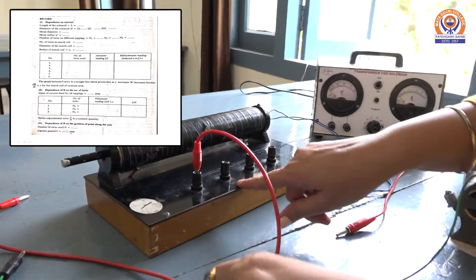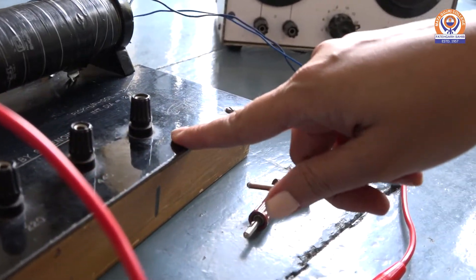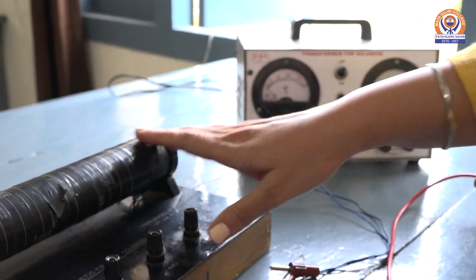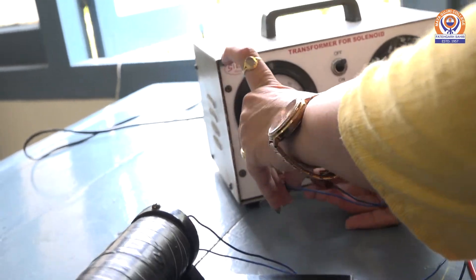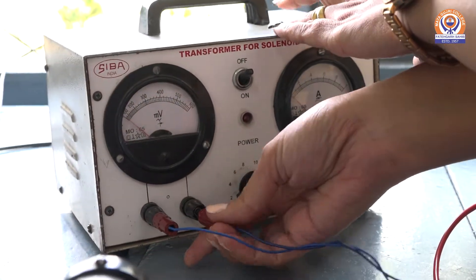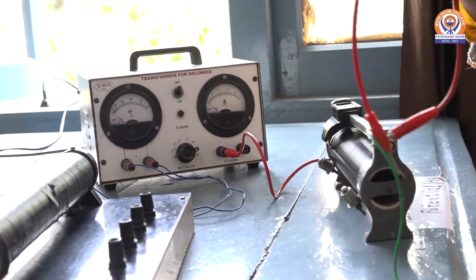And here are three sets of number of turns per unit length: 220, 440 and 660. And we will connect this solenoid to this millivolt meter to check the induced EMF.